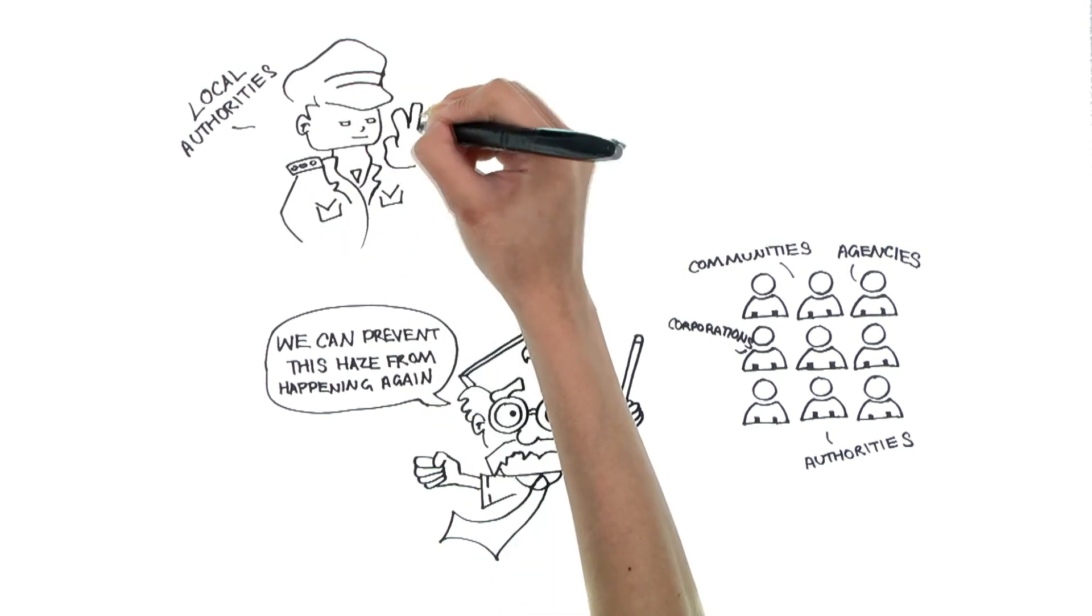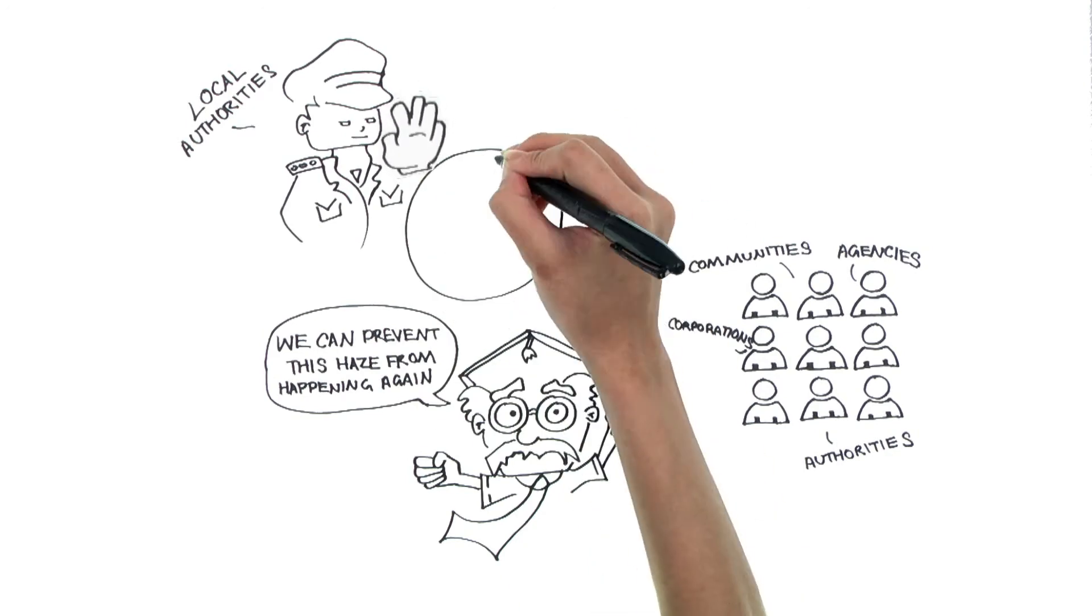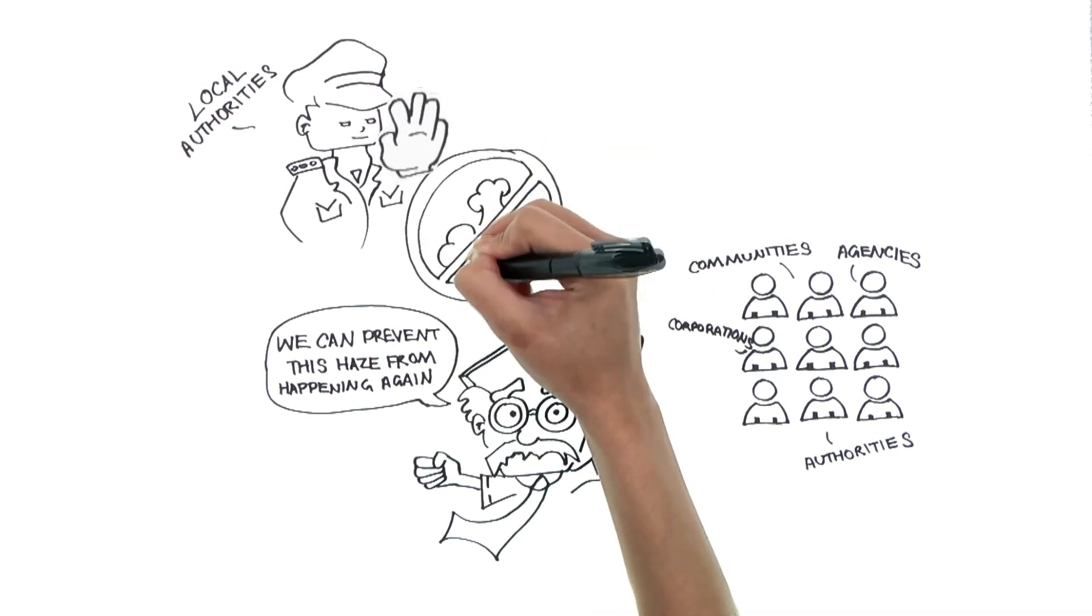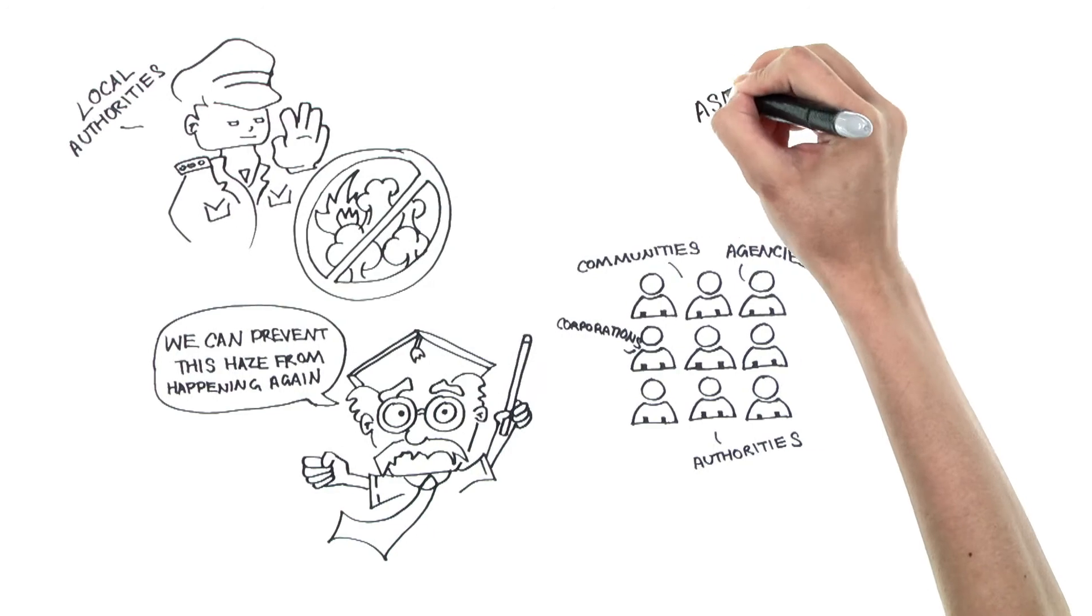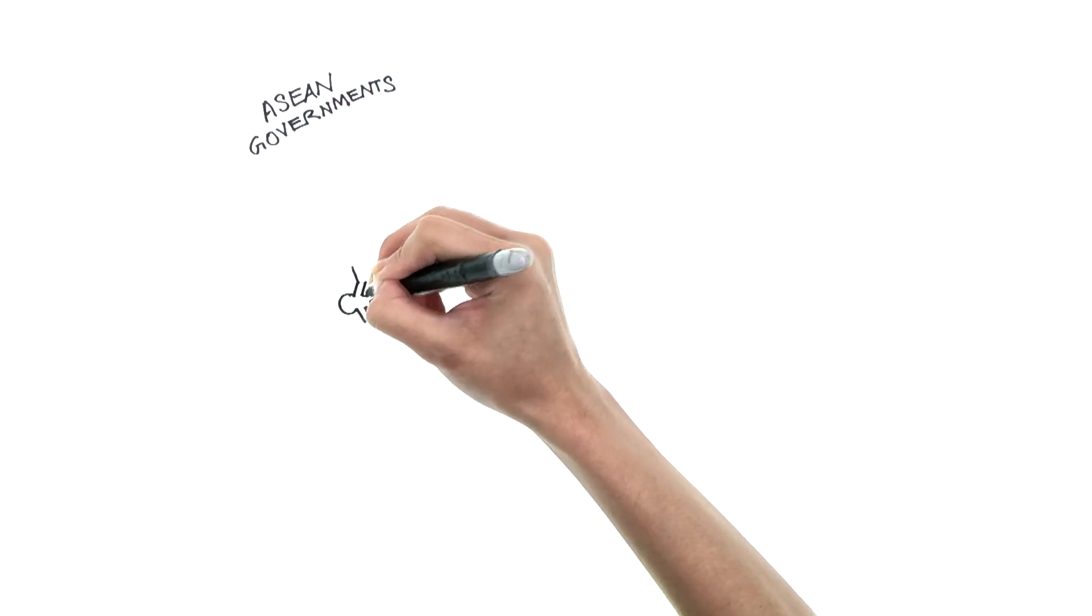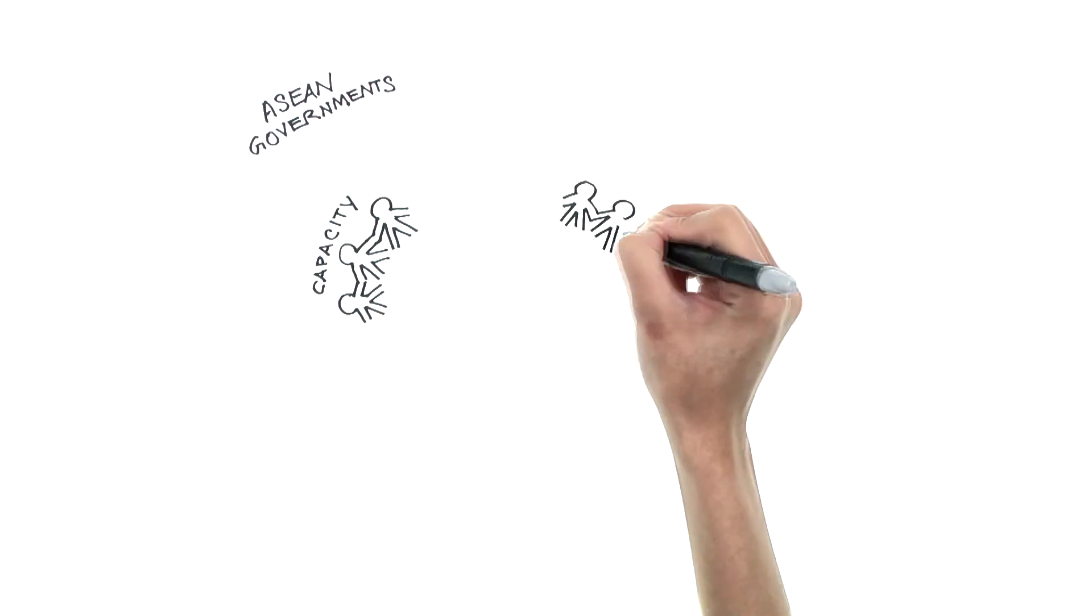For example, local authorities in Indonesia need to more effectively enforce bans on illegal burning activities. ASEAN governments are coming together to develop strategic measures that will strengthen the region's capacity and capability to address and combat transboundary haze pollution.